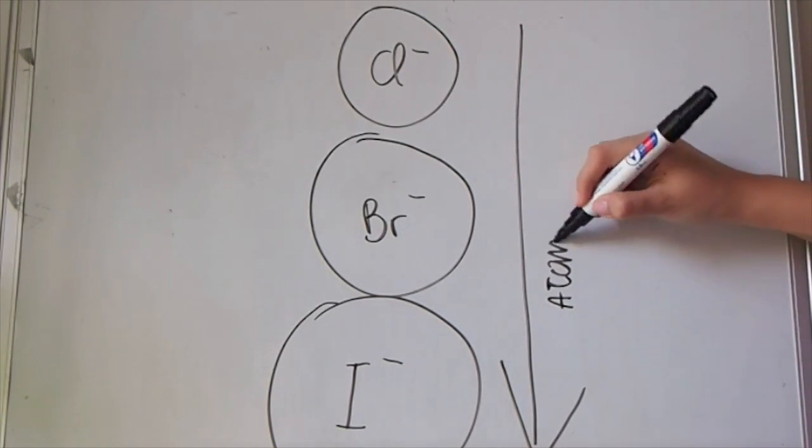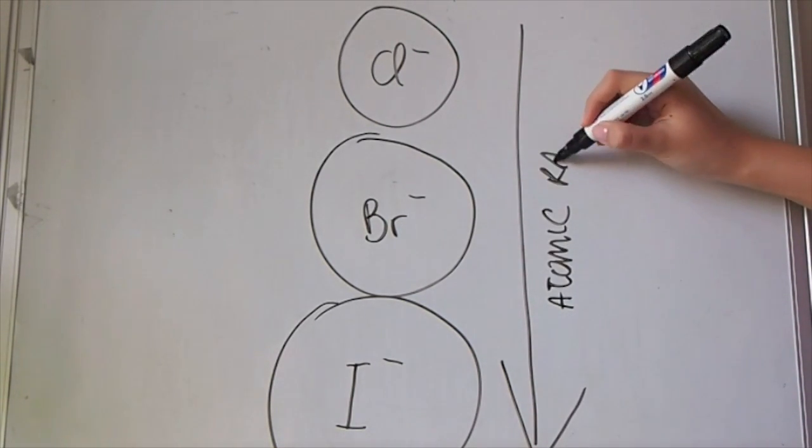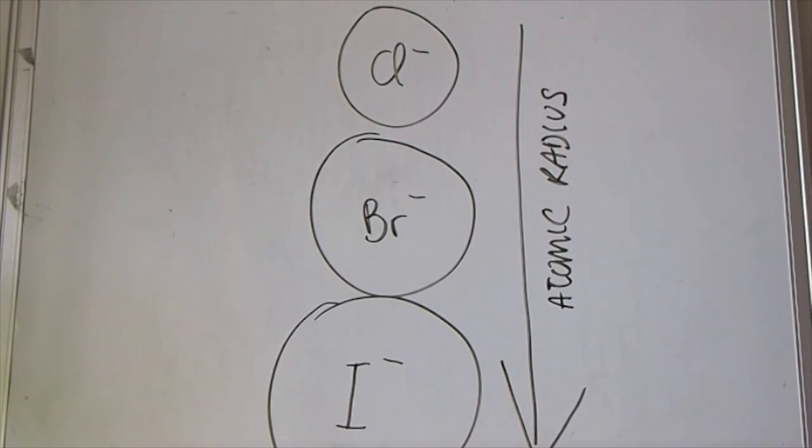This is due to the fact that the atomic radius increases as you go down the group, meaning there is also an increase in surface area.